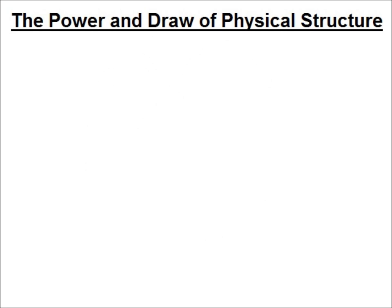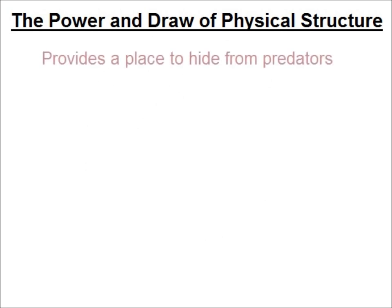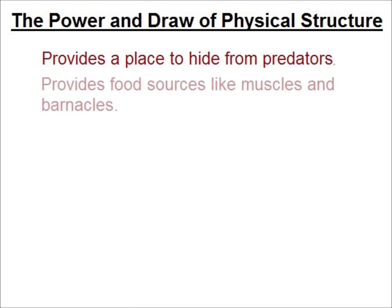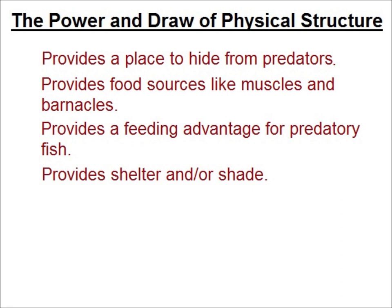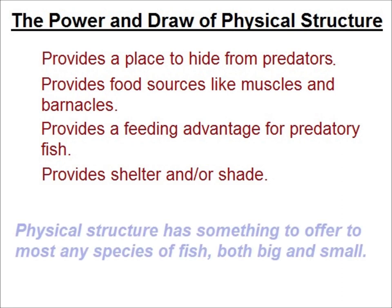Physical structure draws fish for a variety of reasons. For some species, it may provide a place to hide from predators. Some forms, such as dock pilings and bulkheads, might provide food sources like mussels and barnacles. Many predatory fish find a feeding advantage around physical structure. Some forms provide shelter or shade. The point is that physical structure has something to offer most any species of fish, both big and small. And all structure is nothing more than an edge — a transition point from one state to another.